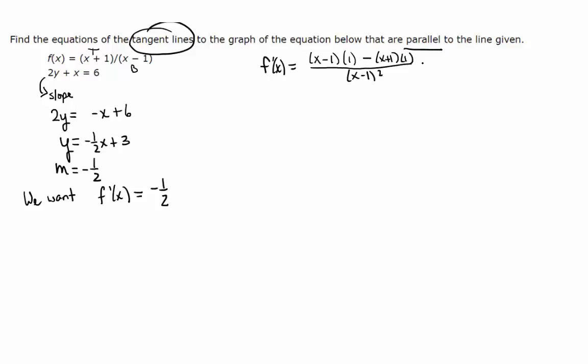So f prime of x is going to be, let's see, x minus 1 minus x minus 1. So that's going to be negative 2 over x minus 1 squared.